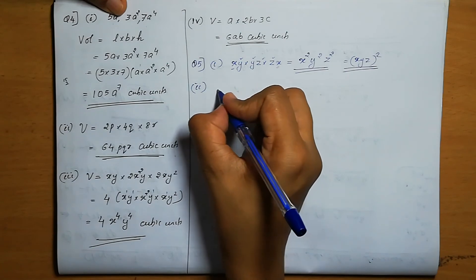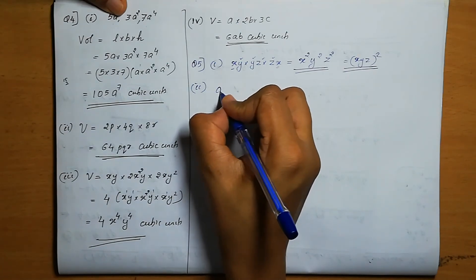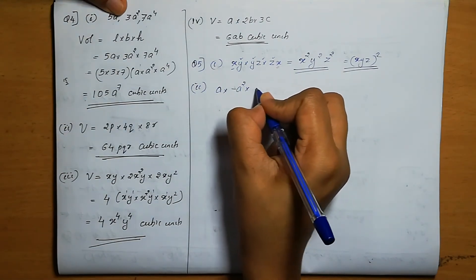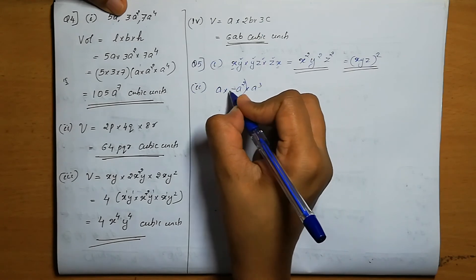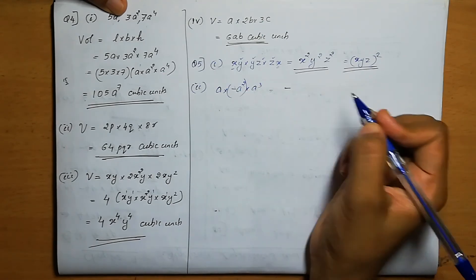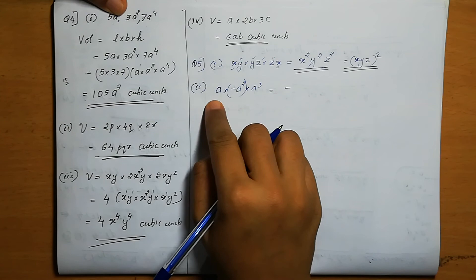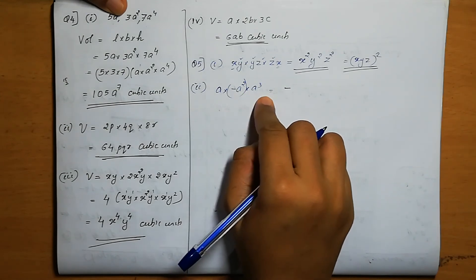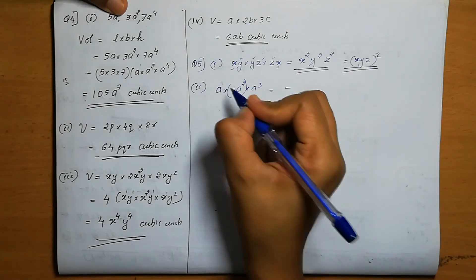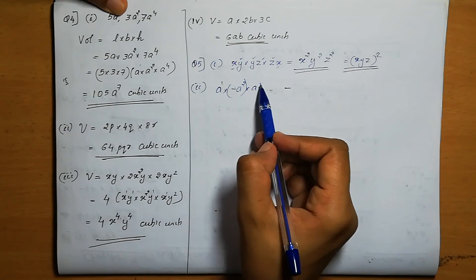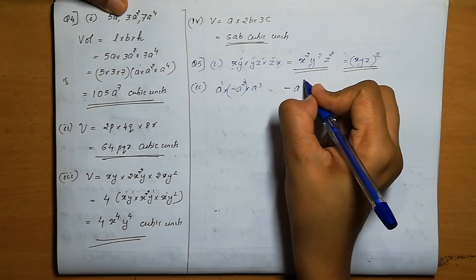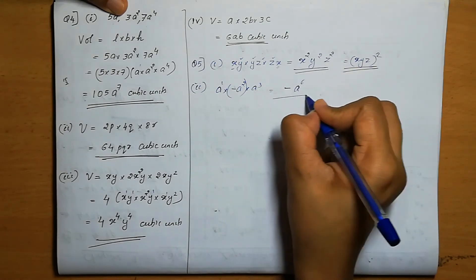Next one: a into minus a square into a cube. Only one minus, so the answer is also in terms of minus. a power 1 plus 2 plus 3 is a power 6. So the answer is minus a power 6.